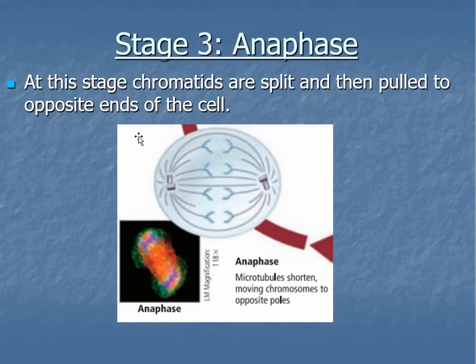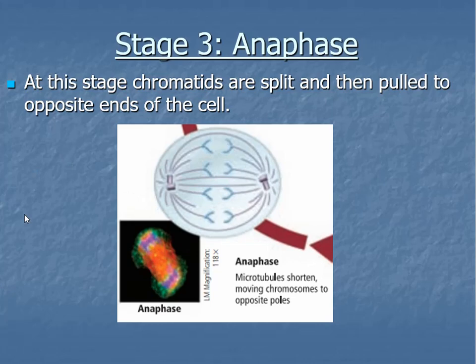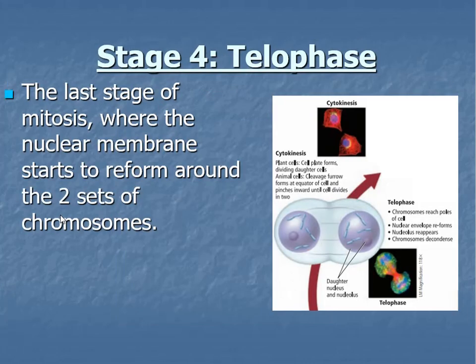In anaphase, the chromatids are pulled in half and then dragged to opposite ends of the cell by the spindle apparatus. You can see that these X shapes have been split in half. This is also an easier cell stage to spot in the scheme of things.